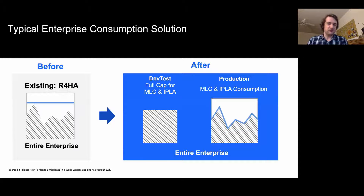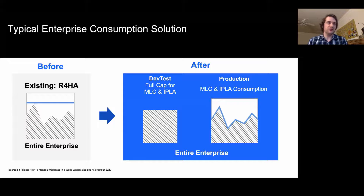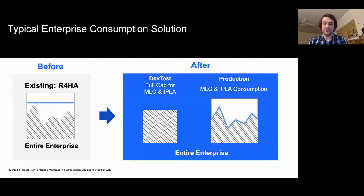Moving from the old model, the rolling four-hour pricing affected not just production workloads but also development and test across the environment, since everyone was focused on keeping billing predictable with no surprises. Under Tailored Fit, production workloads are based on consumption, and you can also exploit a dev/test container that gives you full capacity use for non-production workloads, allowing development and test to maximize use of the systems.